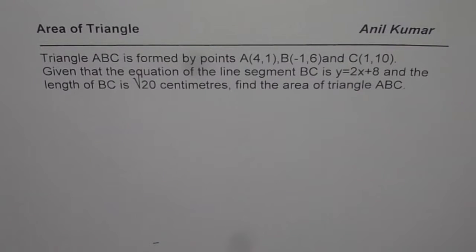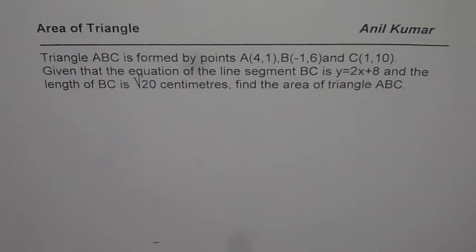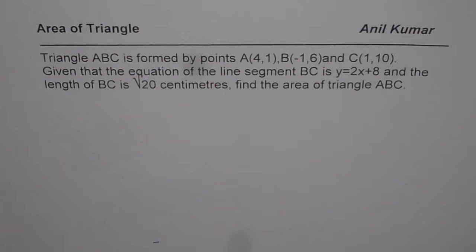I am Anil Kumar sharing with you the solution of an excellent question from my subscriber Robert. Here we will understand how to find the area of a triangle using analytical or coordinate geometry. Triangle ABC is formed by points A(4,1), B(-1,6) and C(1,10). Given that the equation of line segment BC is y = 2x + 8 and the length of BC is √20 cm, find the area of triangle ABC.